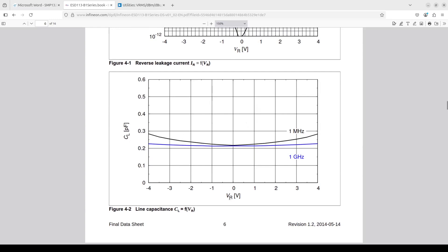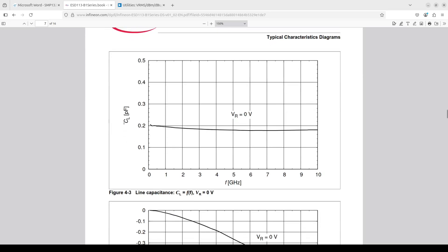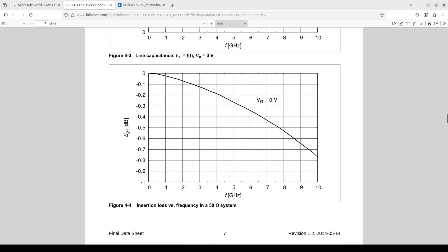Here is capacitance versus voltage. At 1 GHz, slightly above 0.2, and slightly higher for 1 MHz, but still below 0.3. Much better, about 4 to 5 times lower. And here is capacitance versus frequency. The spectrum analyzer has bandwidth of 1.5 GHz, so we are interested in this range. And the capacitance is about 0.2 at 0 V. And this is insertion loss.